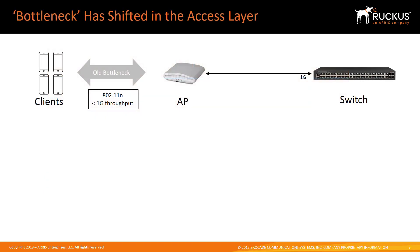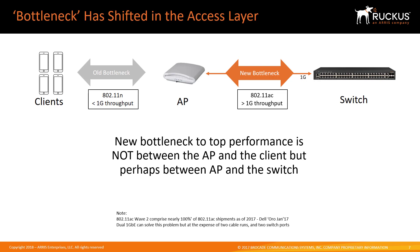Today, the overwhelming majority of enterprise-class switches have 1 gig access ports. As discussed, that was sufficient to support 802.11n Wi-Fi, since the total throughput possible through a wireless access point was below 1 gigabit per second, so connecting to a switch with a 1 gig port was adequate — anything faster wouldn't make any difference. With the advent of 802.11ac and now 802.11ax, an AP has the potential of more than 1 gigabit throughput. Therefore, a 1 gig access port could now possibly be the bottleneck to performance for Wi-Fi users — hence the interest in connections greater than 1 gigabit per second between the access points and the switches.